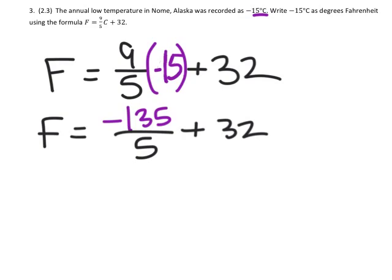Dividing that gives us negative 27, and finally we just add, and that shows us that it's 5 degrees Fahrenheit.